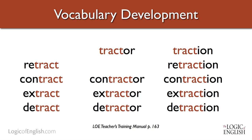A tractor is something that pulls. If we retract — 're' means back or again — so to retract means to pull back. 'Con' means with or together, so to contract with someone means to pull together. When we write a contract, we're pulling together with someone. A contractor's job is to pull people together and get all the people from the different trades working in unison. Extract: 'x' means out — think of the word exit — so extract literally means to pull out. 'D' means down, as in depress, so detract literally means to pull down. It's powerful to see how knowing the meanings of prefixes and roots brings new light to the meaning of words.